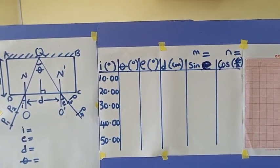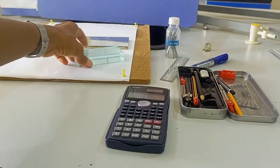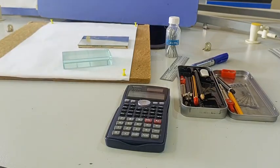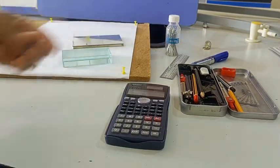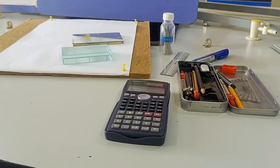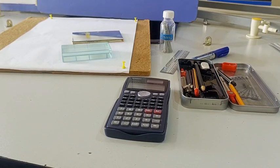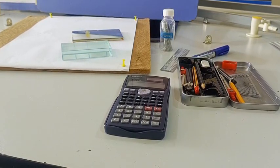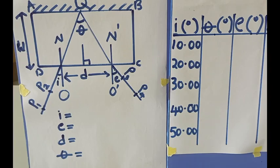We have everything we need ready — the glass block, the plane mirror, the optical pins, and mathematical sets. Let's follow the instruction to get what the practical is all about. I'll read through from the WAEC past question, then we'll do it together.